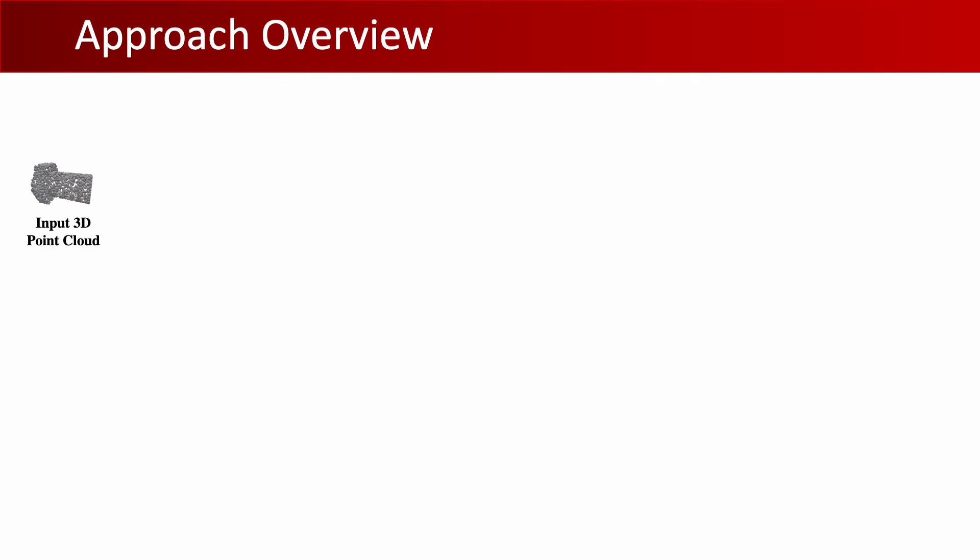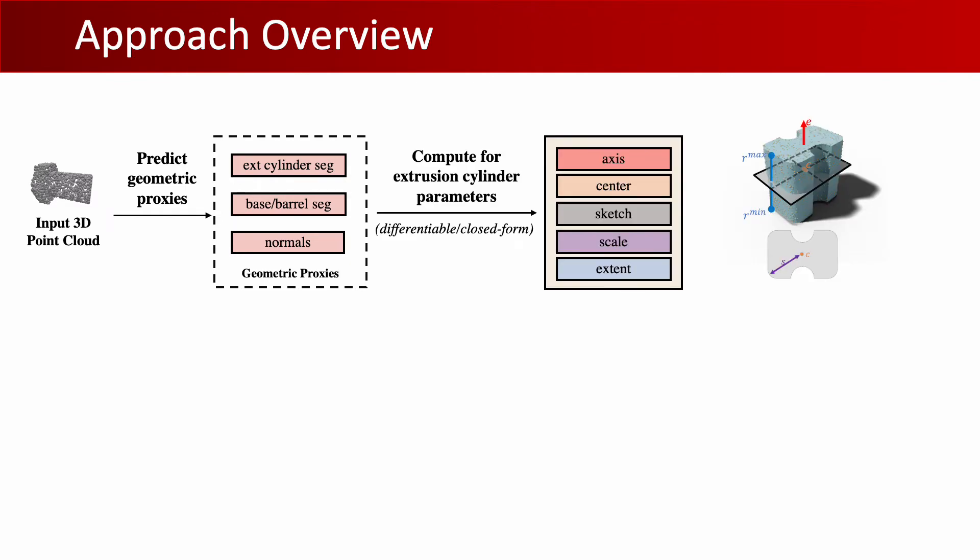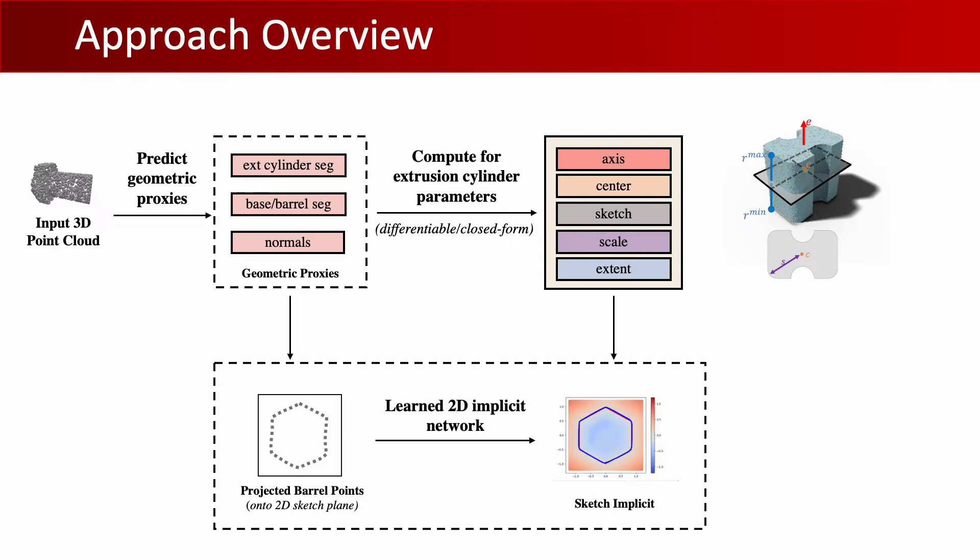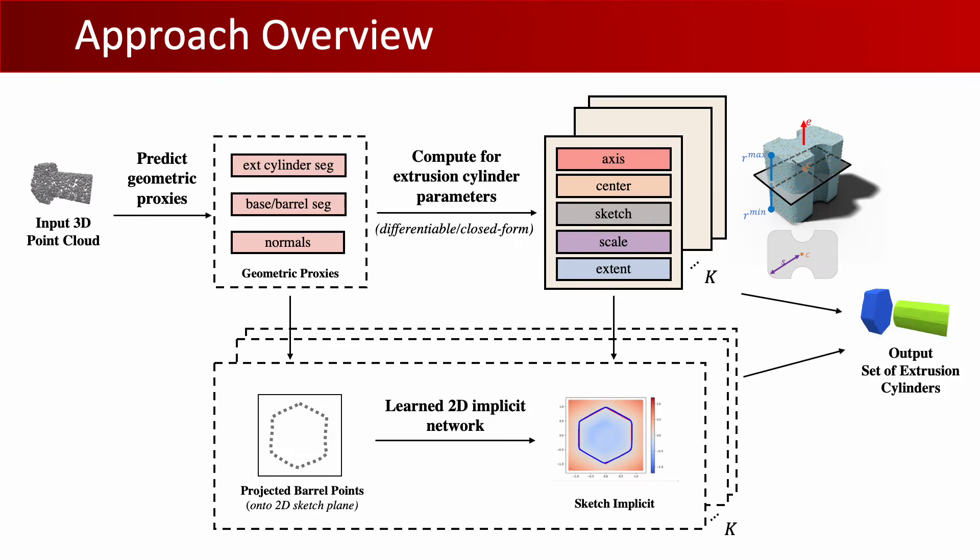Here is an overview of our approach. Given an input point cloud, we predict geometric proxies, which are used to derive and compute the extrusion cylinder parameters for each extrusion cylinder segment. To obtain the closed-loop sketches, we represent them as learned 2D implicits. This is done for all predicted segments, hence obtaining our output set of extrusion cylinders. We now detail the derivation for the axis and the method for the sketches.